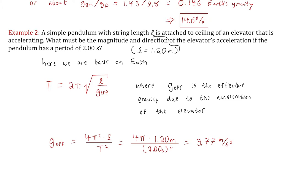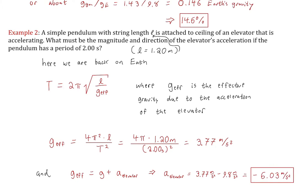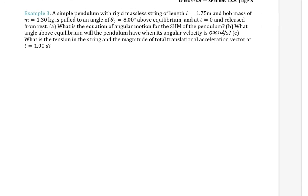Since g_eff = g + a_elevator, and g_eff = 3.77 m/s² is less than g = 9.8 m/s², the elevator's acceleration must be negative (downward): a_elevator = 3.77 − 9.8 = −6.03 m/s². The pendulum swings slower because there's effectively less gravity in the downward-accelerating non-inertial reference frame. Note: there's a typo in the notes where a square was omitted — that will be corrected in the upload.